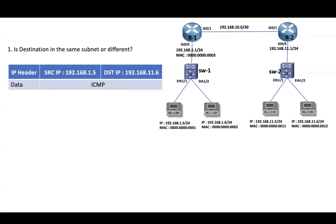In our example, the destination is in a different network. So when the destination is in a different network, traffic will be forwarded to the default gateway. As per this topology, traffic will be sent to R1.